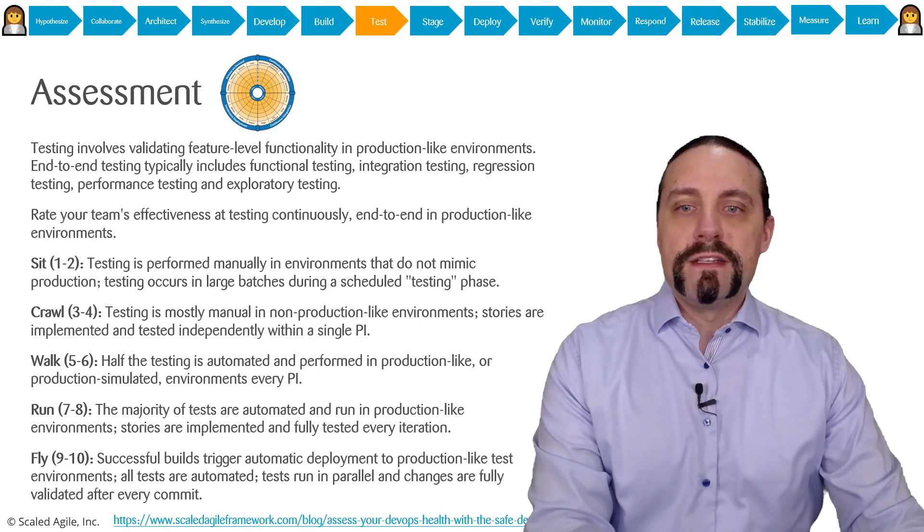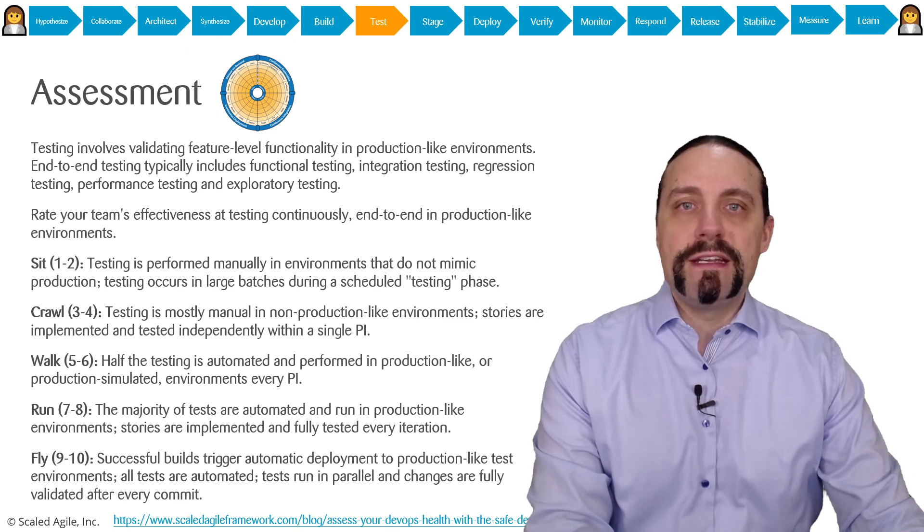You are a Run when the majority of tests are automated and run in production-like environments. Stories are implemented and fully tested every iteration. An iteration is a sprint so it's a two-week cycle.